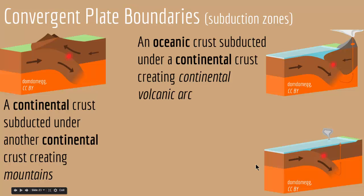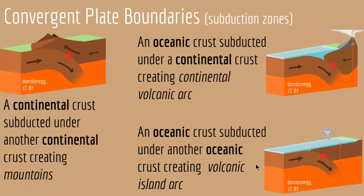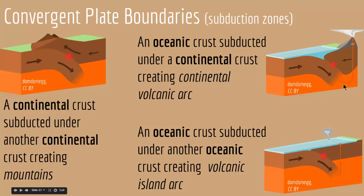The last type of convergent plate boundary is when an oceanic crust is subducted under another oceanic crust, and as a result we get a volcanic island arc. So convergent boundaries come in three forms: two continental crusts colliding, one continental and one oceanic crust, or two oceanic crusts — and each case produces a different geological feature.